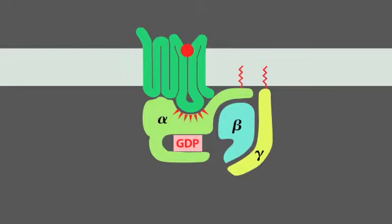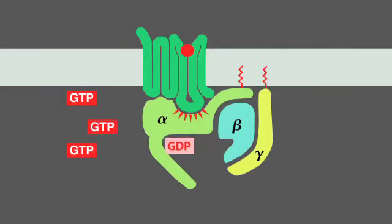In either case, an activated receptor induces a conformational change in the alpha subunit, causing the GDP to dissociate. GTP, which is abundant in the cytosol, can now readily bind in place of the GDP.